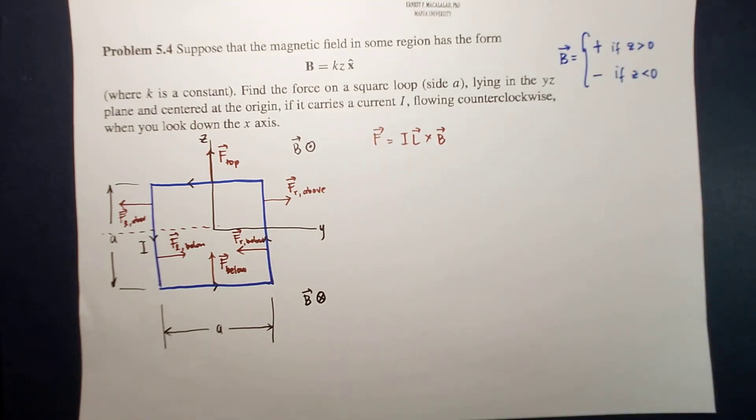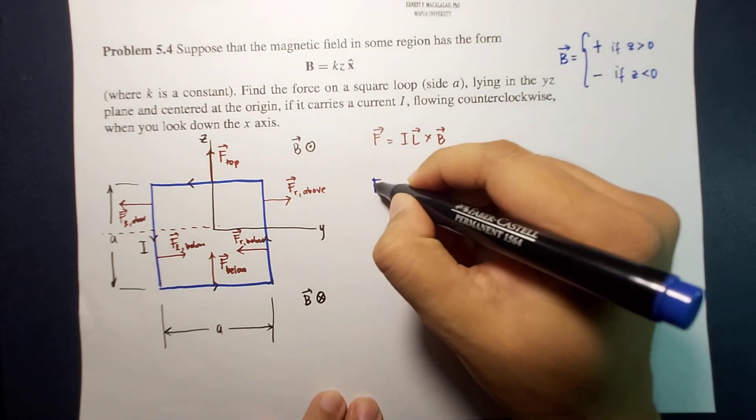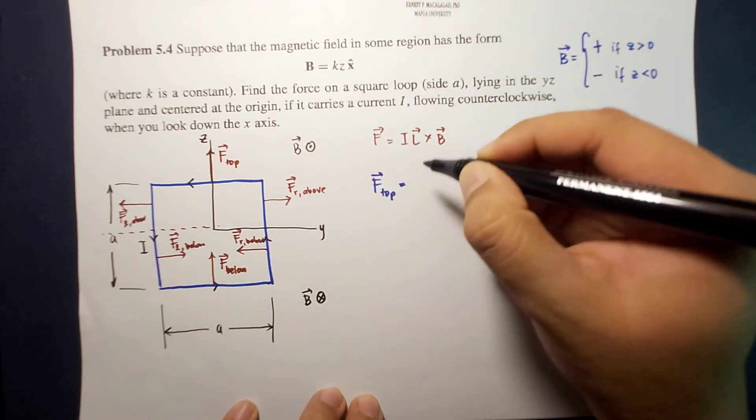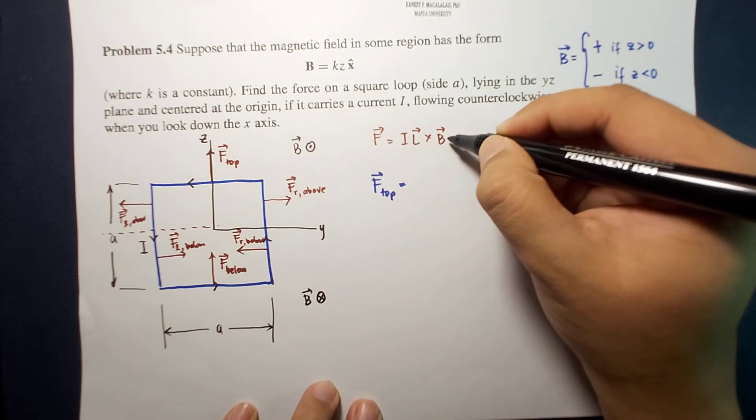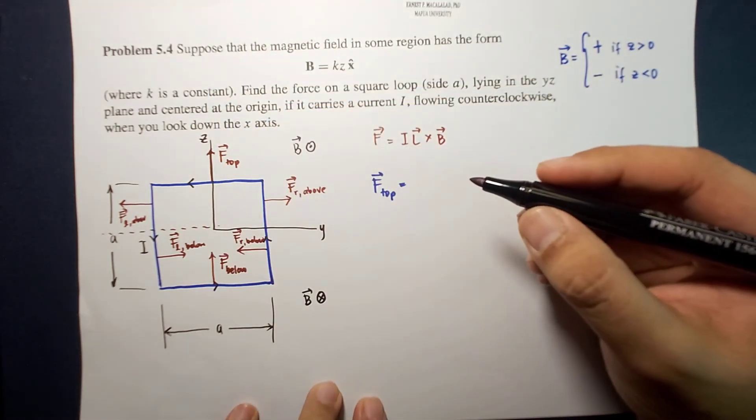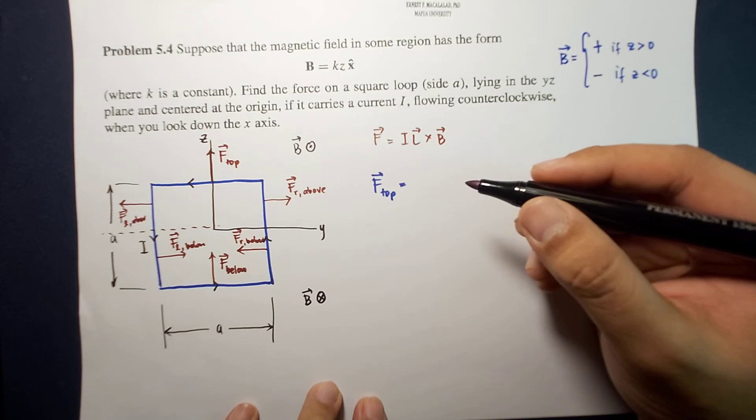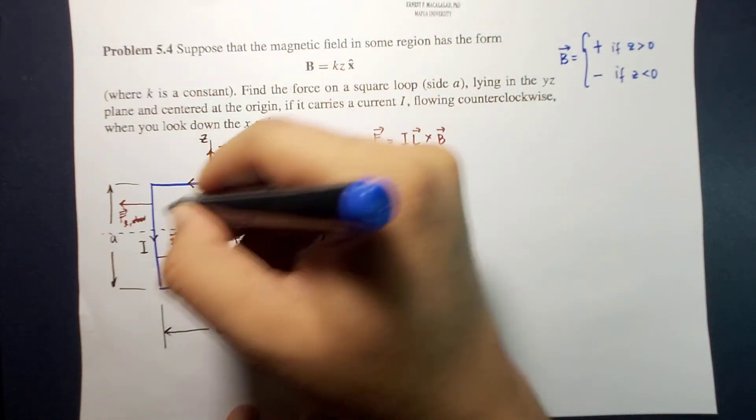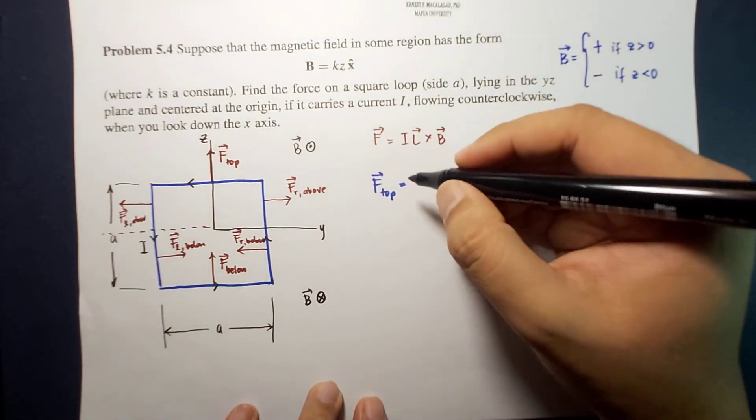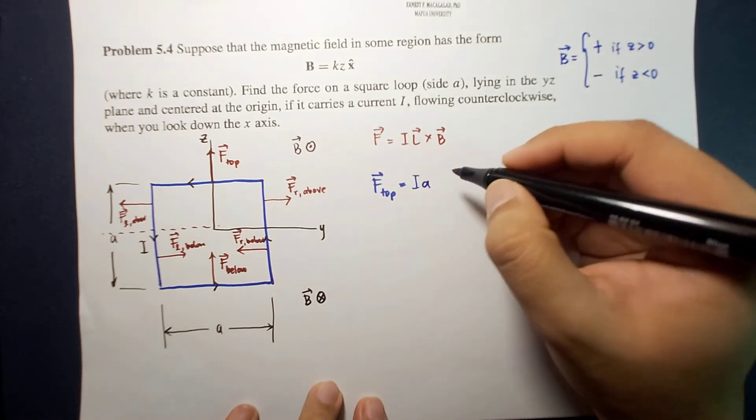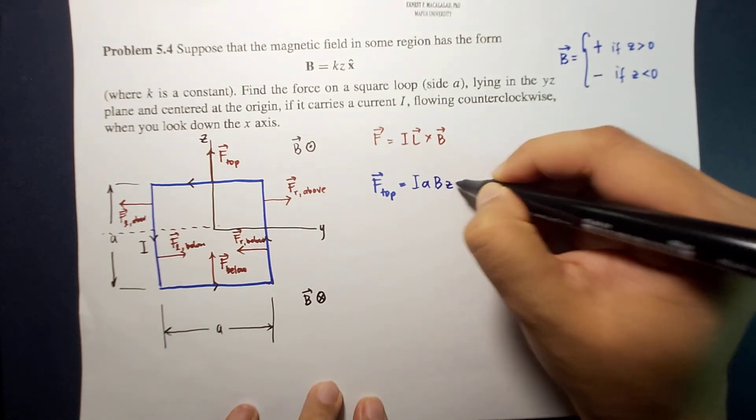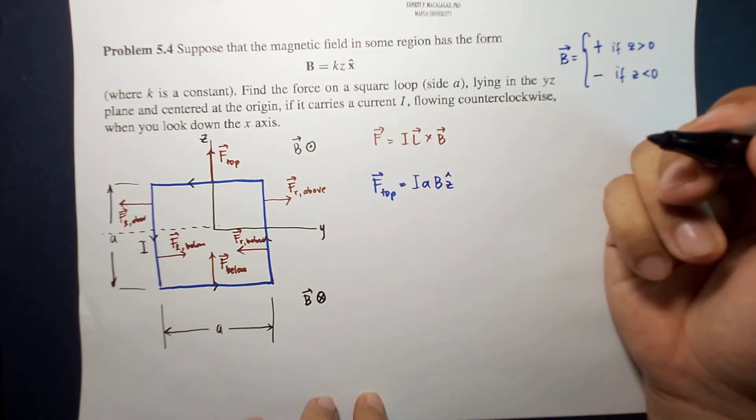So if we're going to compute for the two forces, F top and F bottom. So F top will be equal to I L B and then along the z-hat. And we know that the length of this segment is a. So this is essentially I a B z-hat.